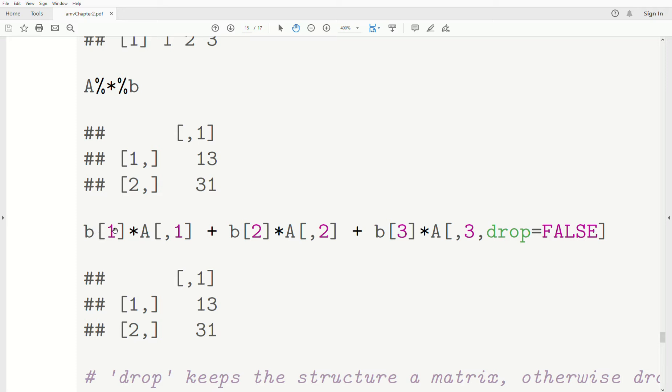B, since it's a vector, we only need one number. That's the first component. A is a matrix. We need two components. The first one is blank, so we want all the rows, but the first column, right? So it's B1 times the first column of A, B2 times the second column of A, B3 times the third column of A.